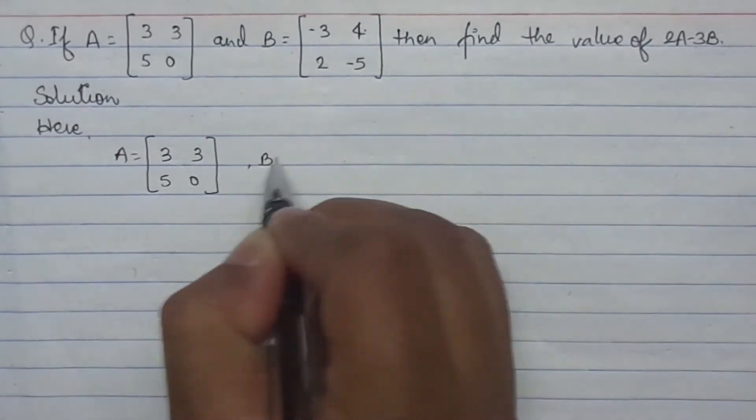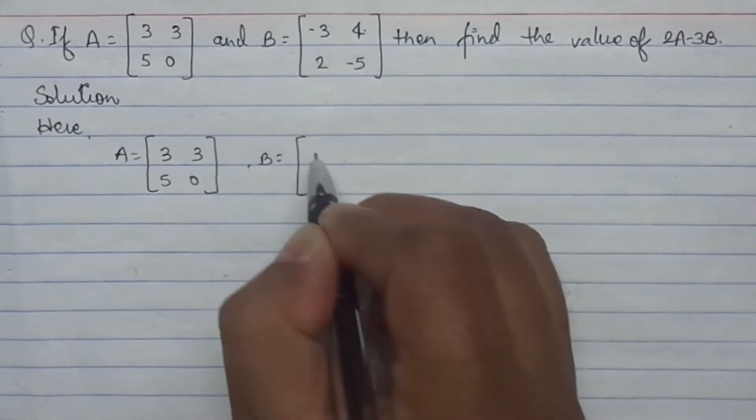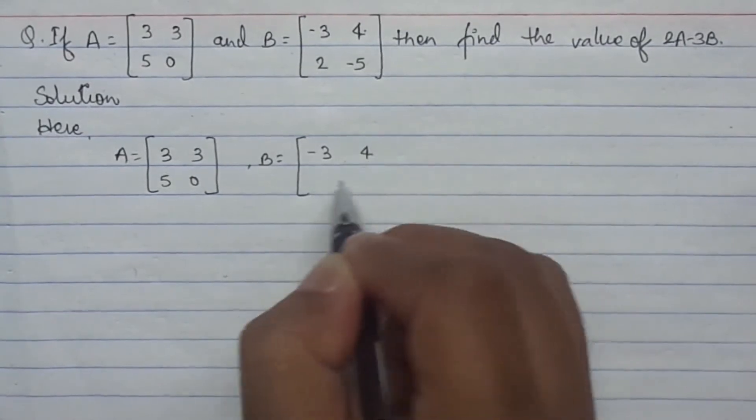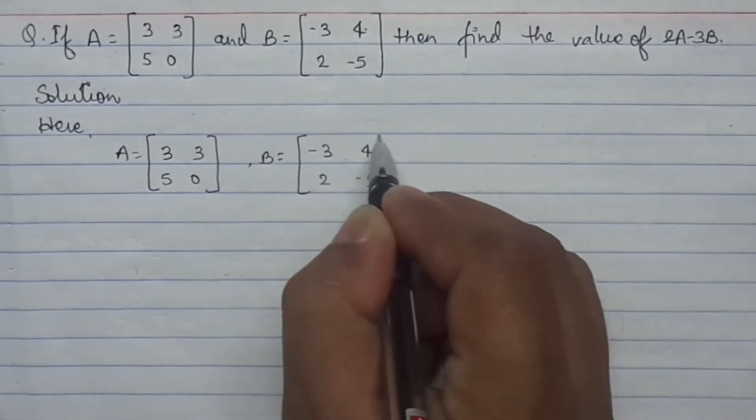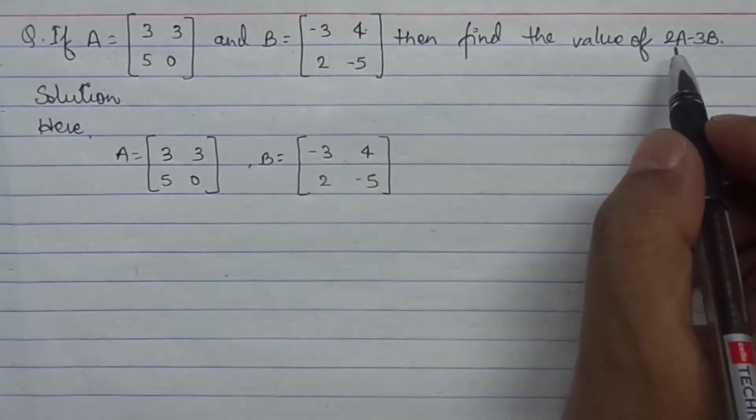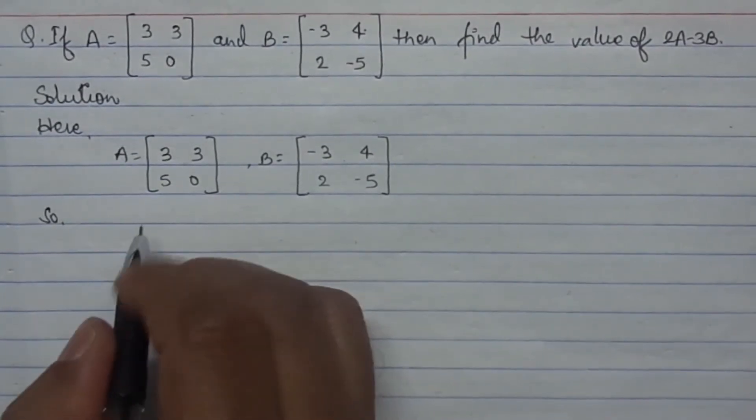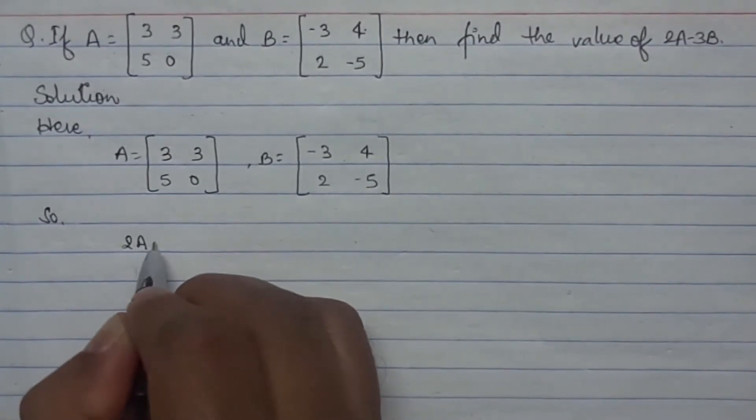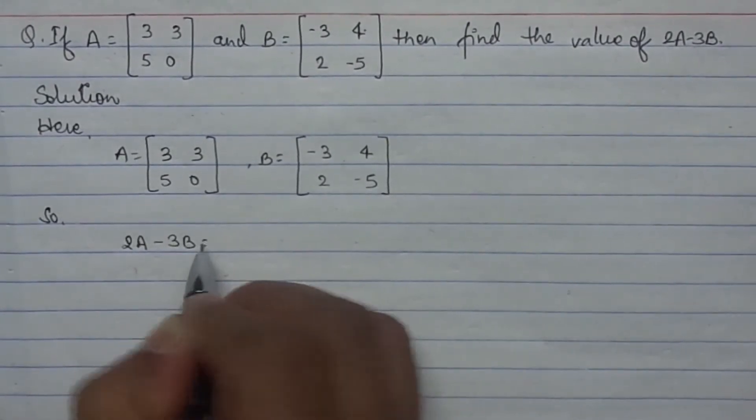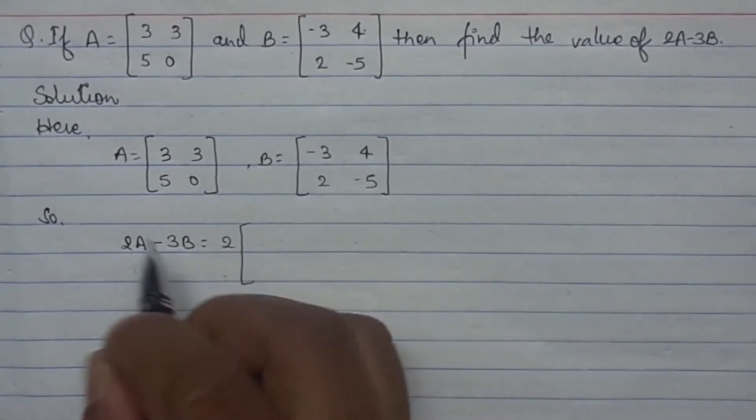B equals [-3 4; 2 -5]. According to the question we need to find 2A minus 3B. So what we need to find is 2A minus 3B equals 2A.